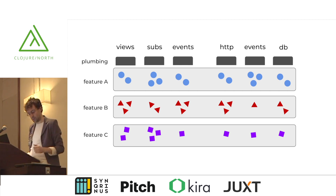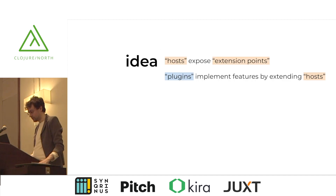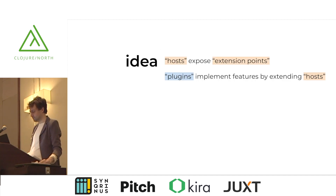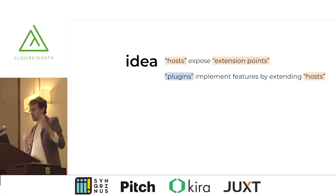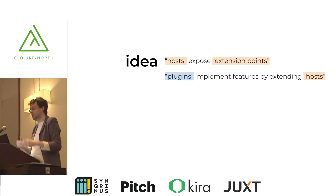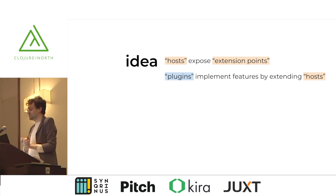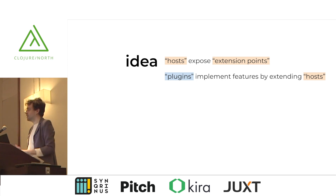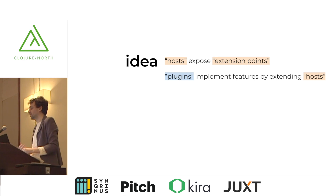So our goal was: instead of thinking about layers, think about features — group code for a single feature together, with some supporting infrastructure for all those features. That's what we started doing with Braid. The terminology was: a host — the system that wants to be extended — exposes some way of being extended, and then plugins extend those hosts.